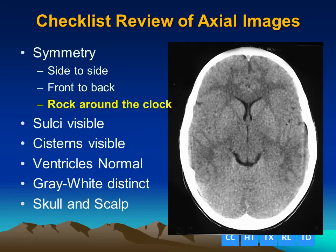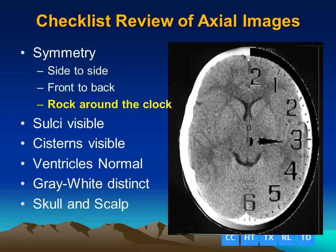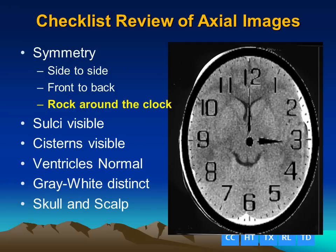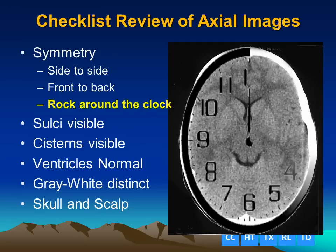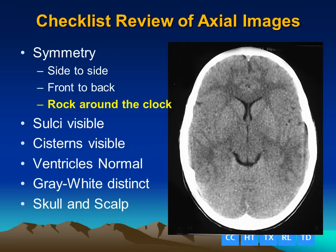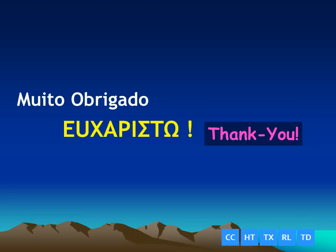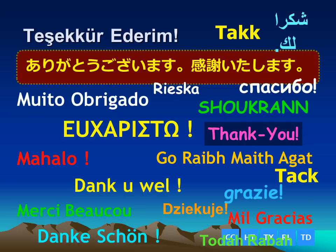In summary, we can look for symmetry and rock around the clock to look all the way around the cerebral hemisphere and make sure that the sulci are symmetric and visible, the cisterns are visible, and the ventricles are normal. Rock around the clock and make sure you don't miss any critical lesions that will cause brain herniation. This has been Jim Smirniotopoulos, and thank you for your attention.